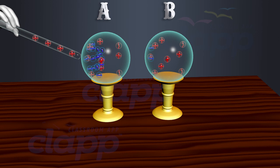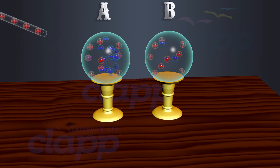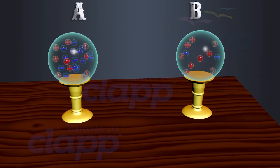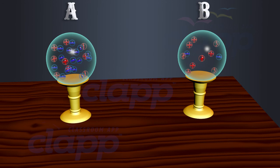Now, remove the rod and the charges on the spheres rearrange themselves. If we separate the spheres further apart, the charges on them become uniformly distributed.